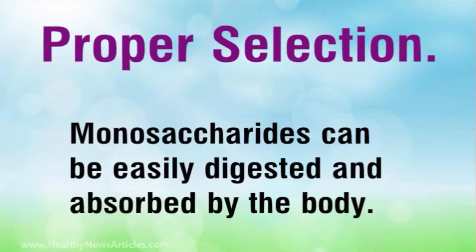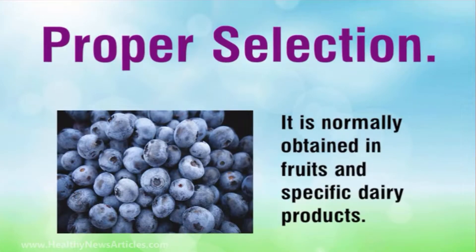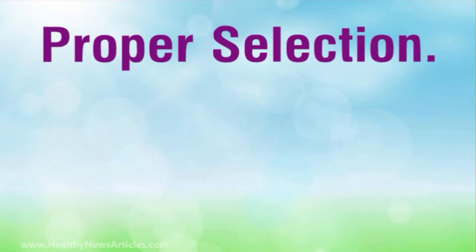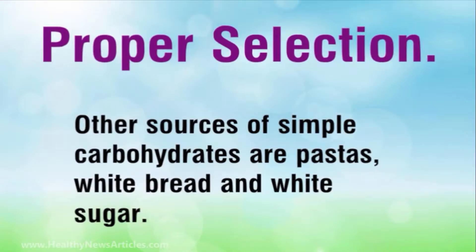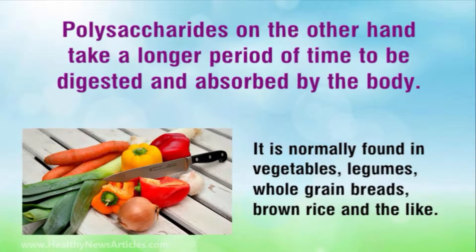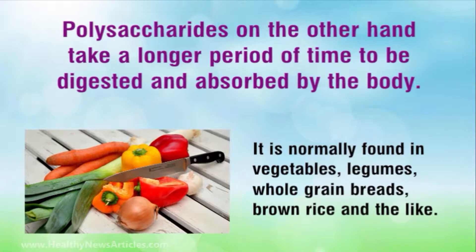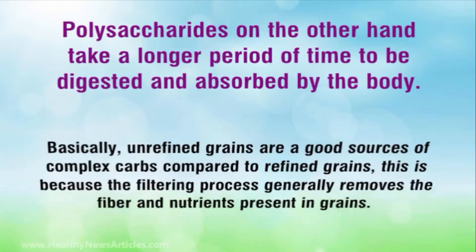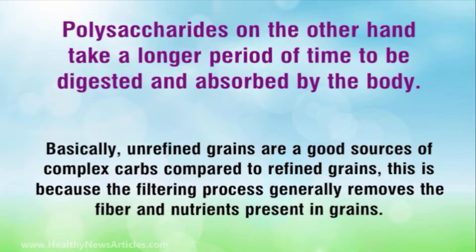Monosaccharides, or simple carbs, can be easily digested and absorbed by the body. They are normally found in fruits and specific dairy products. Other sources include pasta, white bread, and white sugar. Polysaccharides, or complex carbs, on the other hand, take a longer period of time to be digested and are normally found in vegetables, legumes, and whole grain breads.